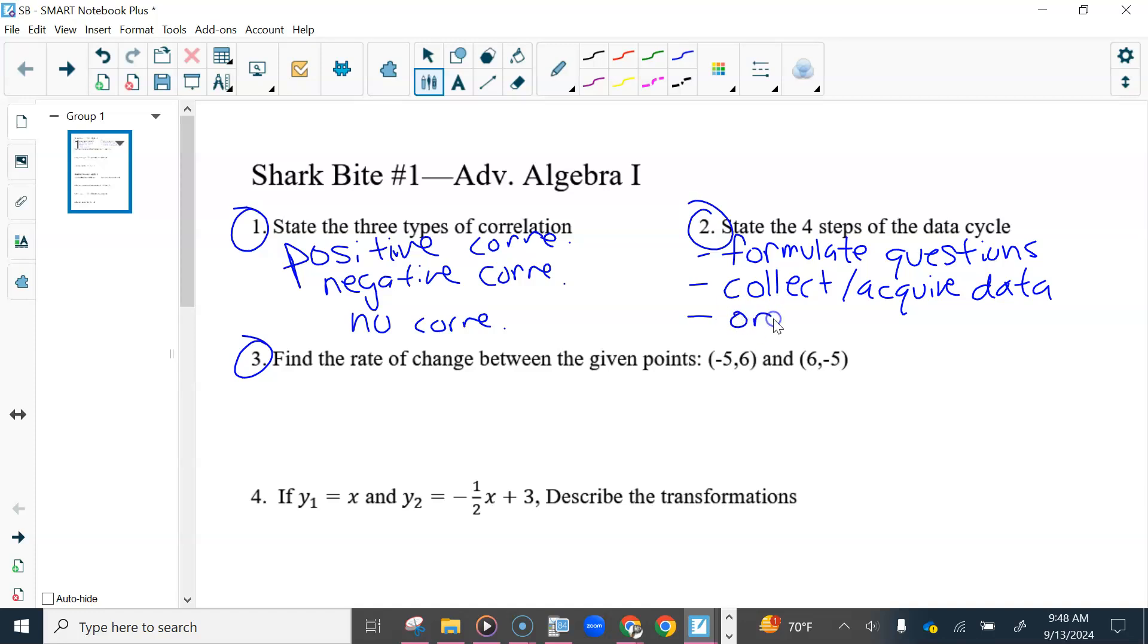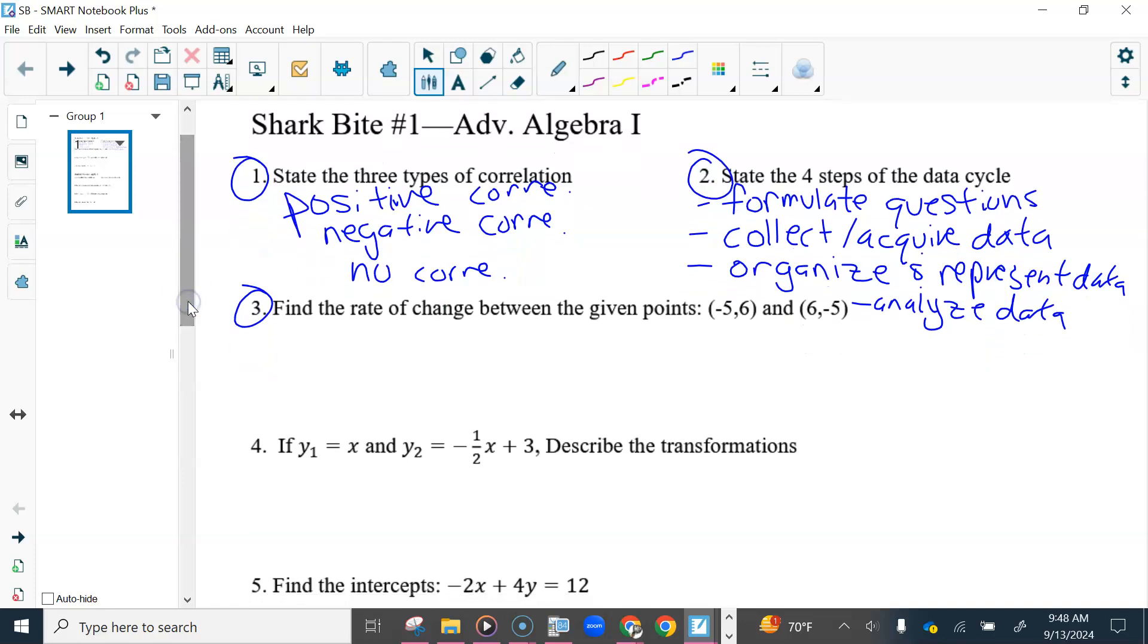I decide to organize and represent data, really analyze the data and communicate the results, but I don't have space to write all of that. For number 3, find the rate of change between the points. You are finding the slope using your slope formula, m equals y2 minus y1 over x2 minus x1.